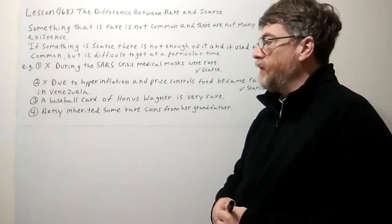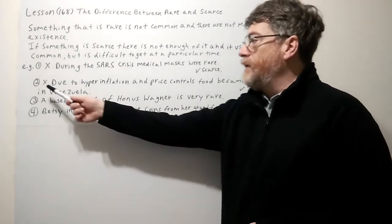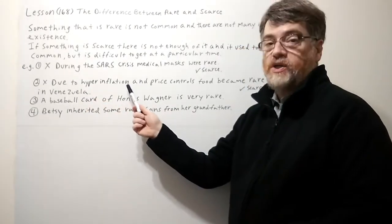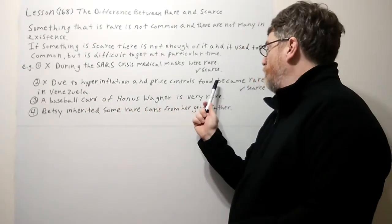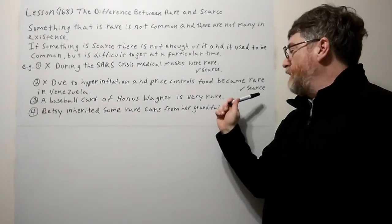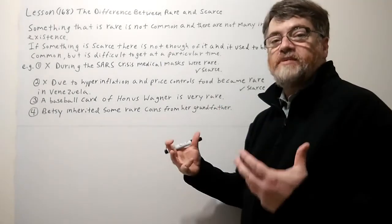Let's look at number two. Again, with the X this means this is wrong. Due to hyperinflation and price controls, food became rare in Venezuela. Now here, of course, the answer would be scarce. Food became scarce.